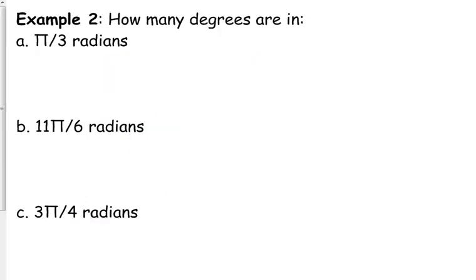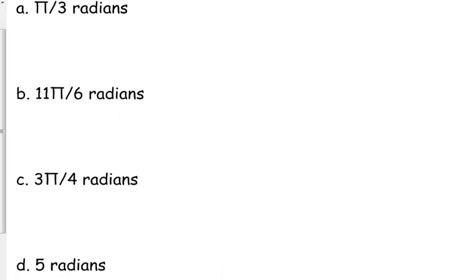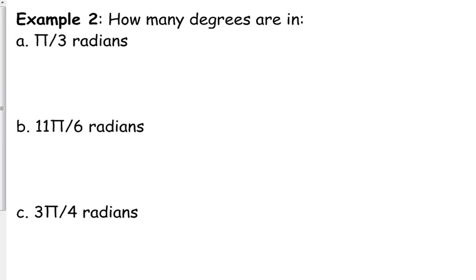So, let's go the other way. Let's go from radians to degrees. Now, on here, I did write out radians every time. But you can kind of make the assumption that if π is involved, it's in radians. If there's no degree symbol, it's in radians. So, you don't necessarily need to write radians on your paper for all these examples. You can just write π over 3, 11π over 6, 3π over 4.